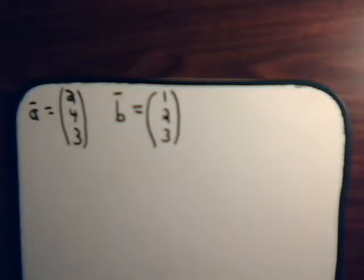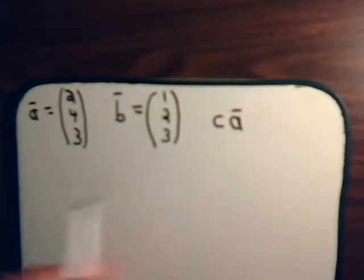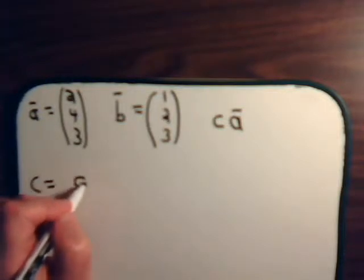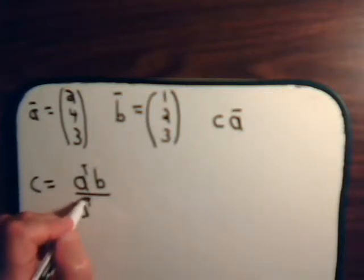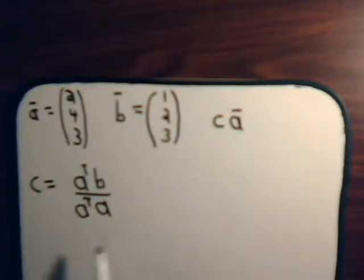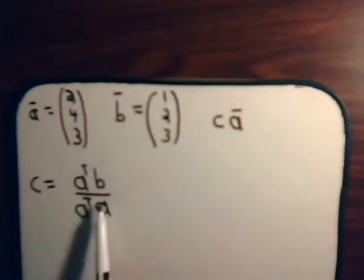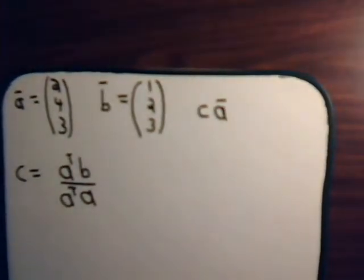Now, remember that the projection of B onto A is just going to be some scalar times vector A. And that scalar C is equal to A transpose B divided by A transpose A. This is the magnitude of A squared. This is the inner product of vector A with vector B. I'm going to leave the bars off the vectors now because it gets too messy. So, let's see what C comes out to be equal to.